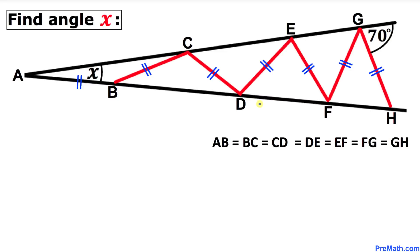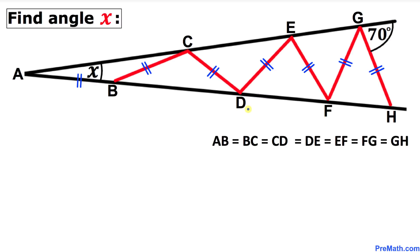Welcome to PreMath. In this video tutorial we have a diagram consisting of a bunch of isosceles triangles such that the side lengths AB equal to BC equal to CD equal to DE equal to EF equal to FG equal to GH are all equal. Moreover, angle G is 70 degrees and we are going to calculate angle X. Let's go ahead and get started with the solution.